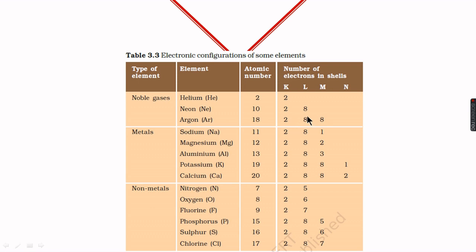We will concentrate only on valence electrons. Helium has two valence electrons and satisfies the duplet rule. Neon and argon have eight valence electrons and satisfy the octet rule. Noble gases are highly stable and inert because they satisfy the octet rule or the duplet rule.